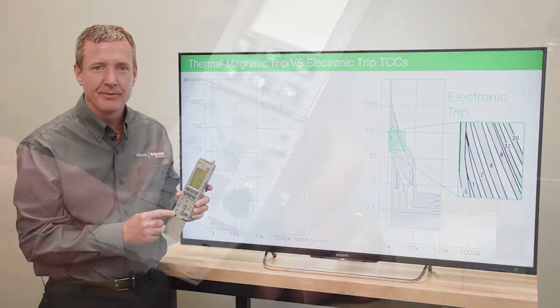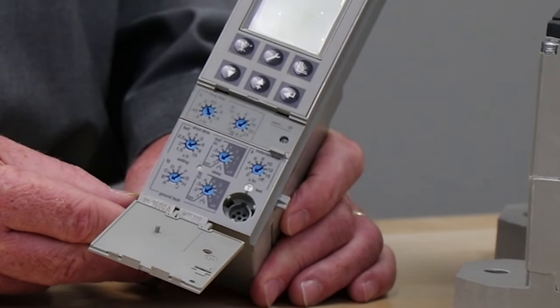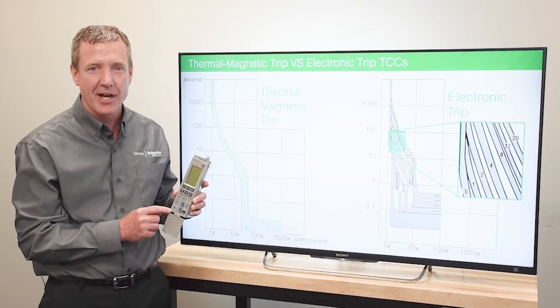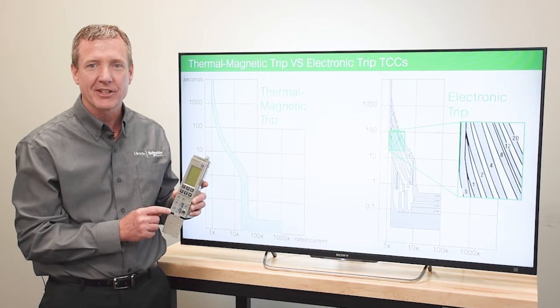As seen here, this rotary switch has nine settings. Each setting matches to a set of the distinctive time-current curves for the electronic trip unit.